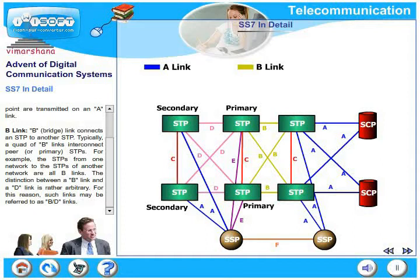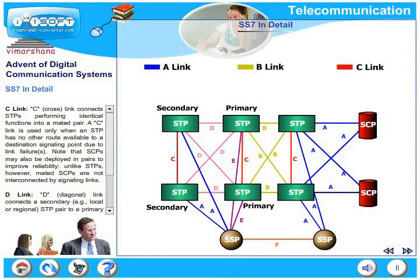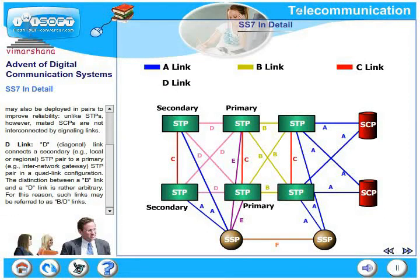A C-link connects STPs performing identical functions into a mated pair. A C-link is used only when an STP has no other route available to a destination signaling point due to link failures. Note that STPs may be deployed in pairs to improve reliability. A D-link connects a secondary STP pair to a primary STP pair in a quad-link configuration. The secondary STP pair could be local or regional, and the primary STP pair could be an inter-network gateway. The distinction between a B-link and D-link is arbitrary, so they are called B- or D-links.